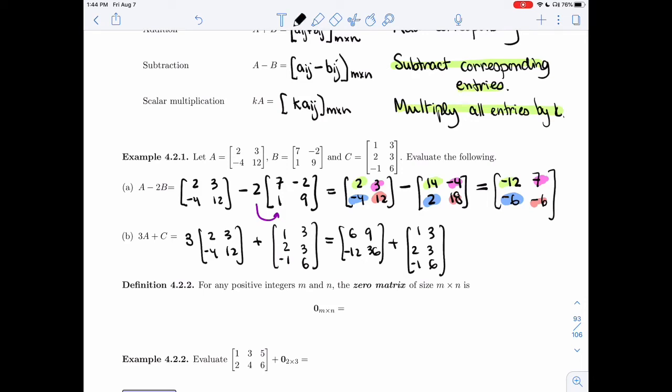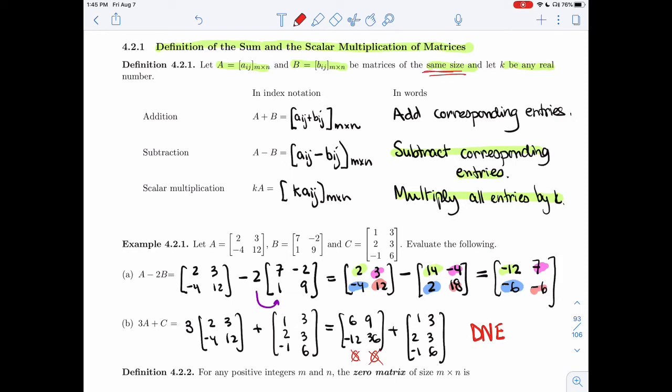So I cannot, we've just seen that that wouldn't be the same matrix. I cannot put zeros here. They're not the same size. That means this is not defined. So it does not exist. The addition and the subtraction were defined only for matrices of the same size.